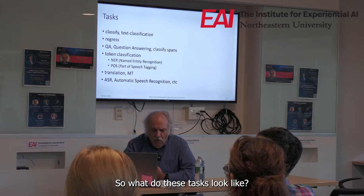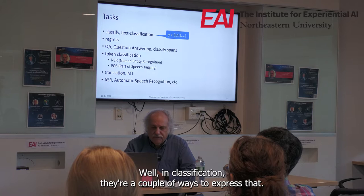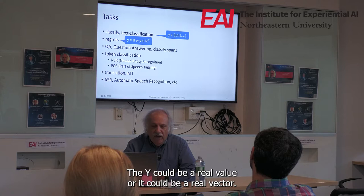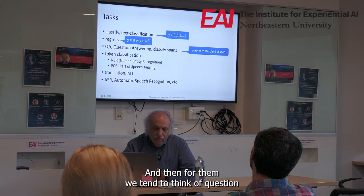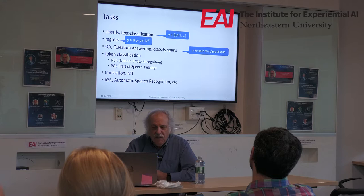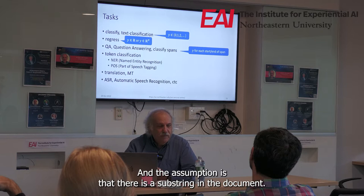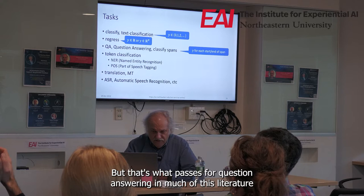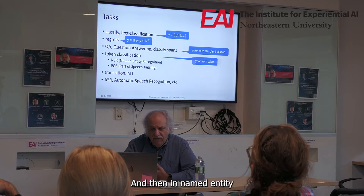What do these tasks look like? In classification, the y is going to be one of a limited set of categorical variables. In regression, the y could be a real value or a real vector. Question answering, sometimes called SQuAD, acts as if it's answering questions, but really all it's doing is classifying spans — specifying where a substring starts and ends. The assumption is that there is a substring in the document that is the answer. In named entity recognition, I prefer to think of this as token classification — you have an output for every token.